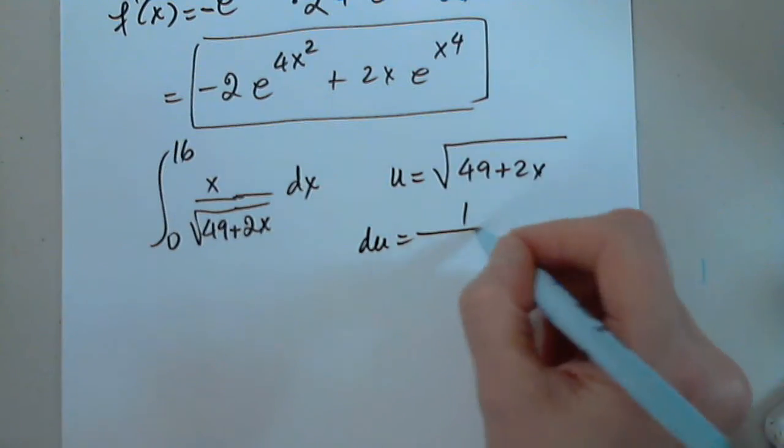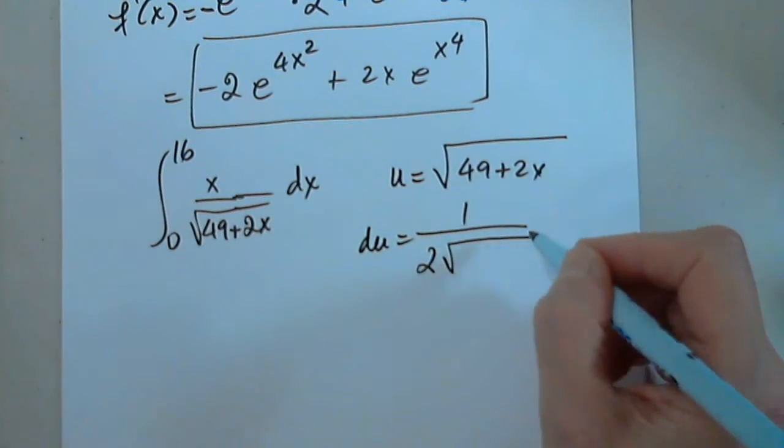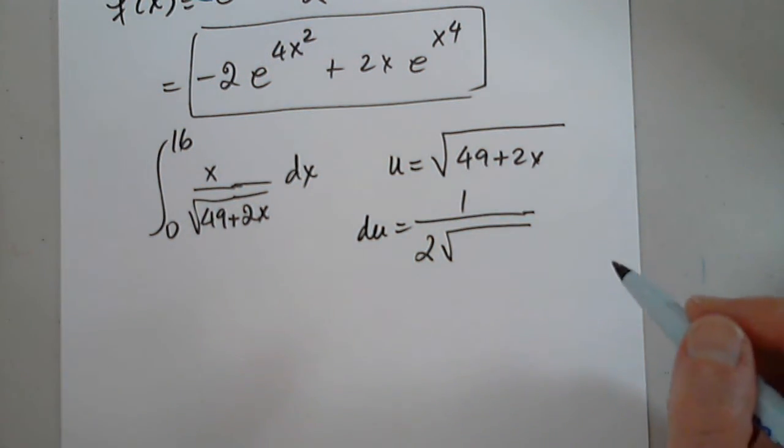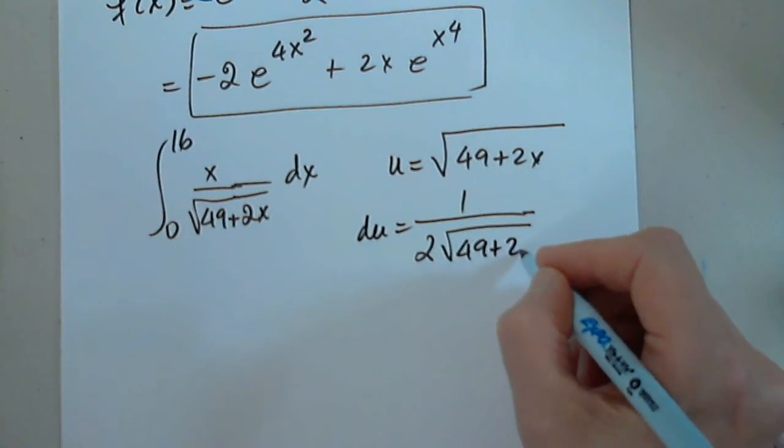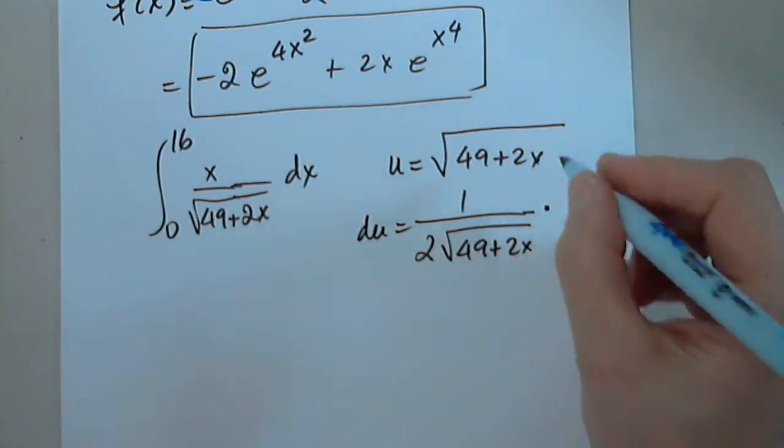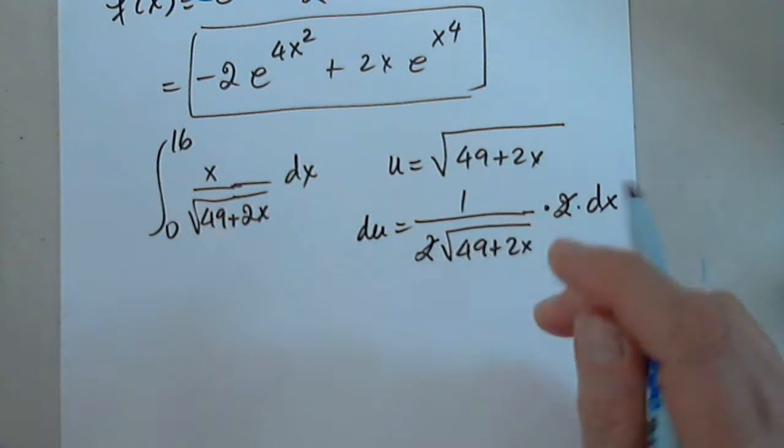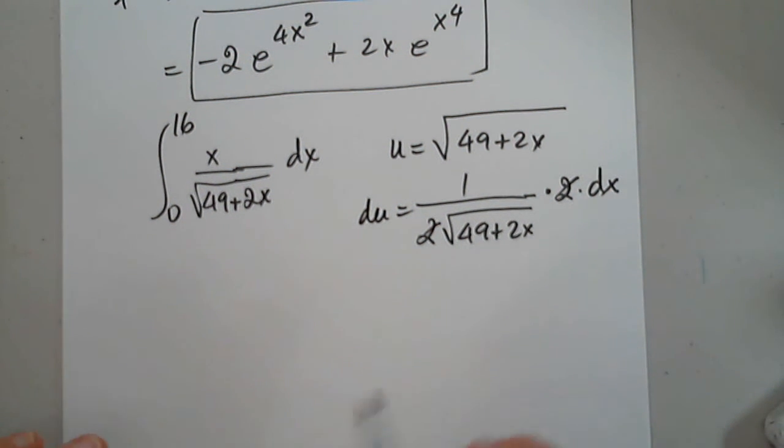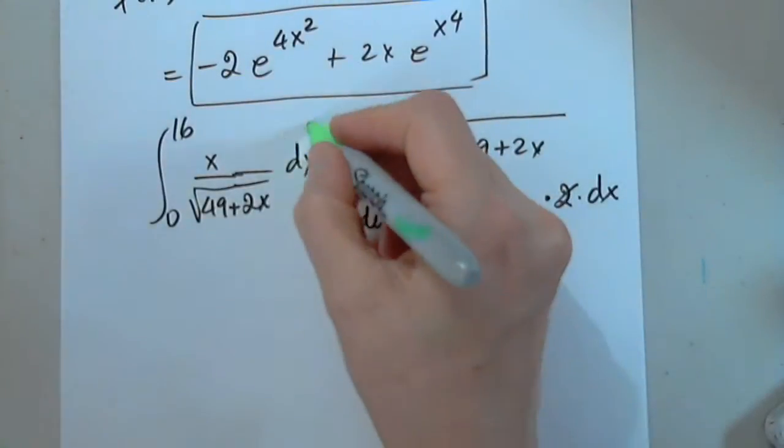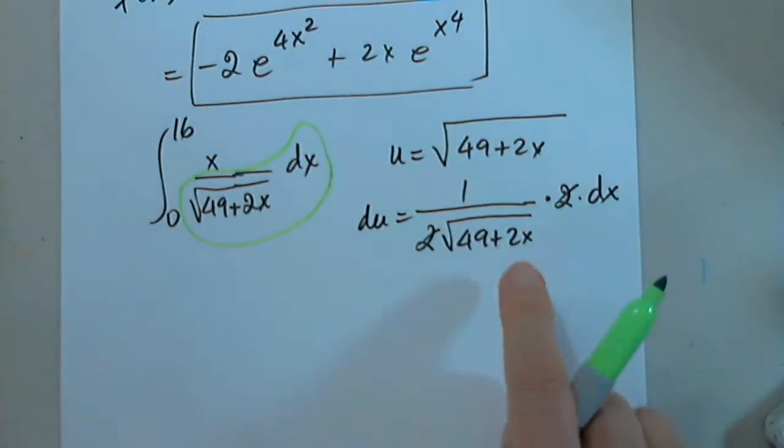So du will be 1 over 2, the square root of 49 plus 2x times the inner function prime and times dx. So I like it so far, because all this, as you see, dx over this is du.